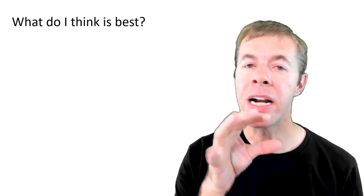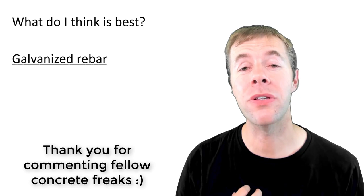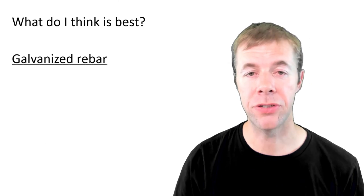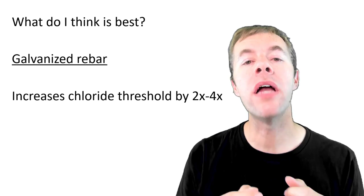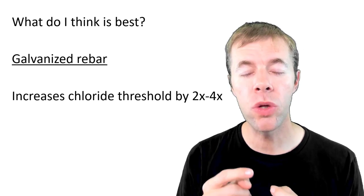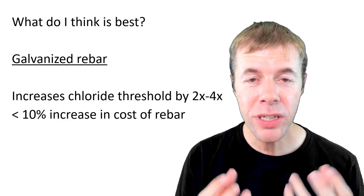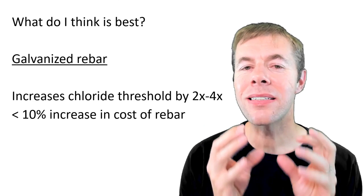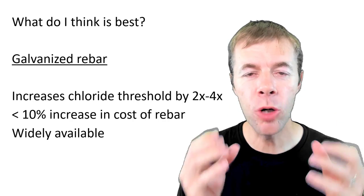But what do I think is best? I know if I didn't answer this question I would get it in my comments below. I think personally that galvanized rebar is the best solution. Why? Because it's a balance. Number one, it increases your chloride threshold level by two to four times. Number two, the cost increase is minimal - it's less than 10% of the cost of the rebar.